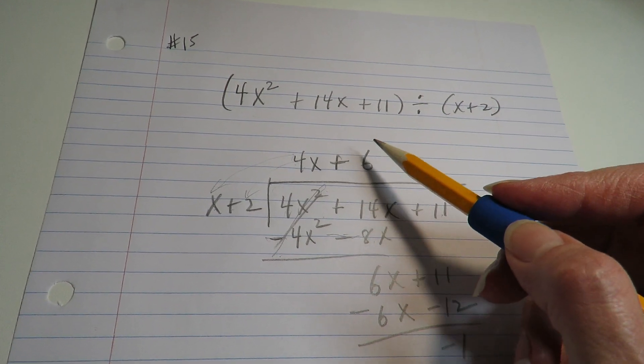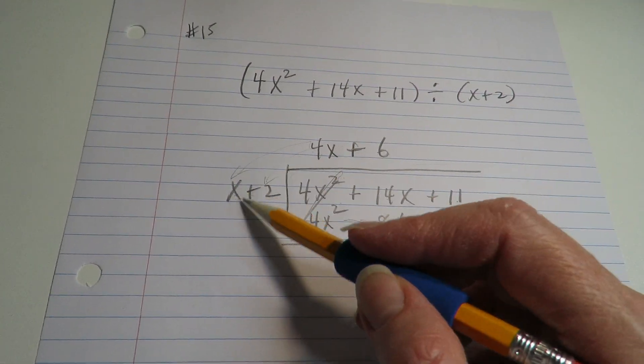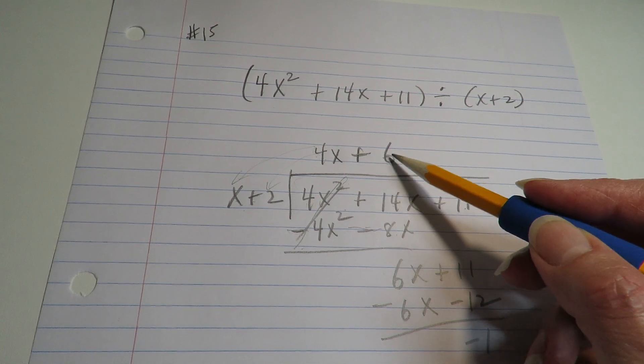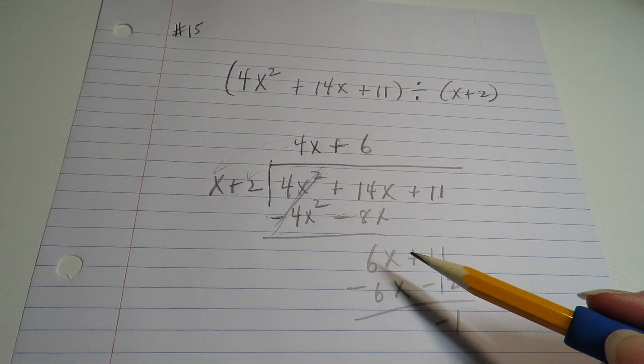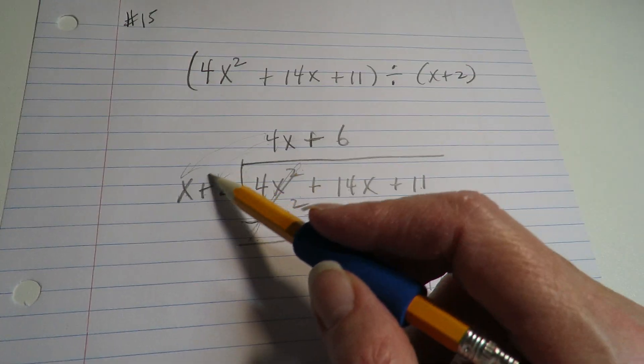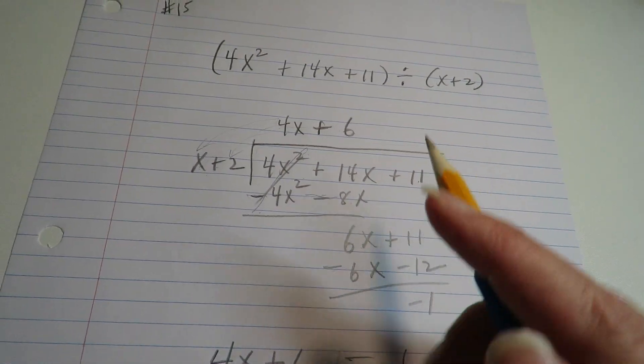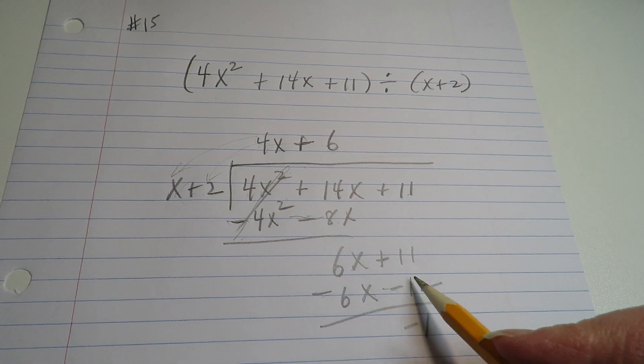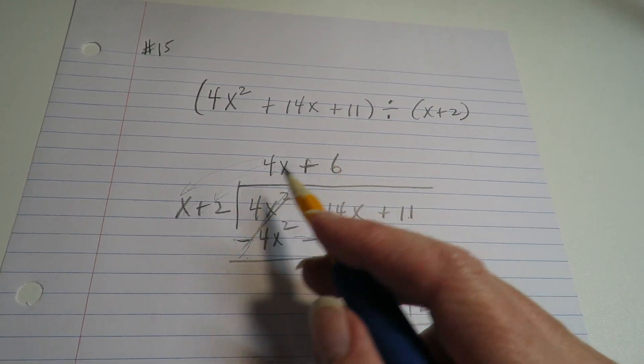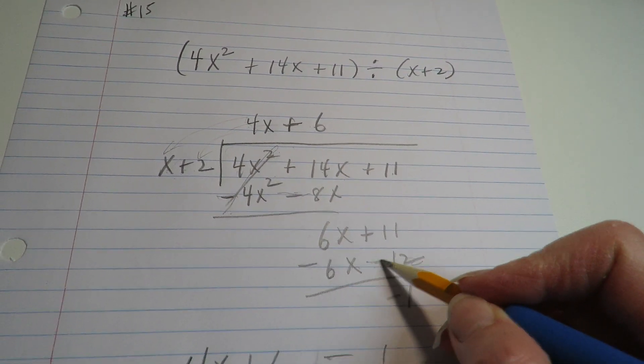So now we try to figure out what times x makes 6x. So it would be 6. So 6 times x makes 6x. But remember, you always have to opposite the signs. So 6 times x will be negative 6x, and 6 times 2 will be negative 12, because it was originally a positive 12, but you are the one that opposites the signs.